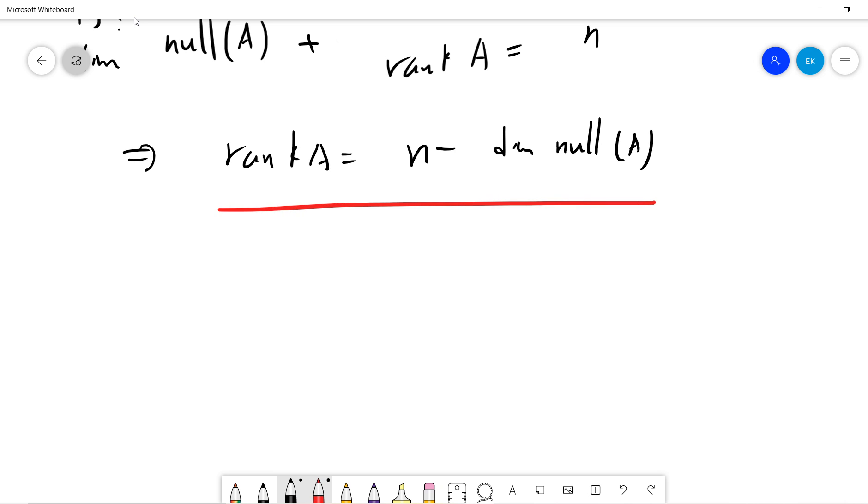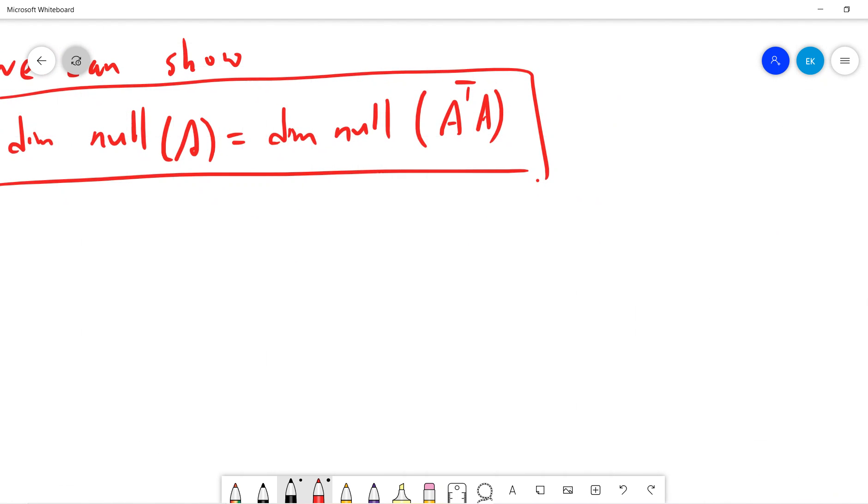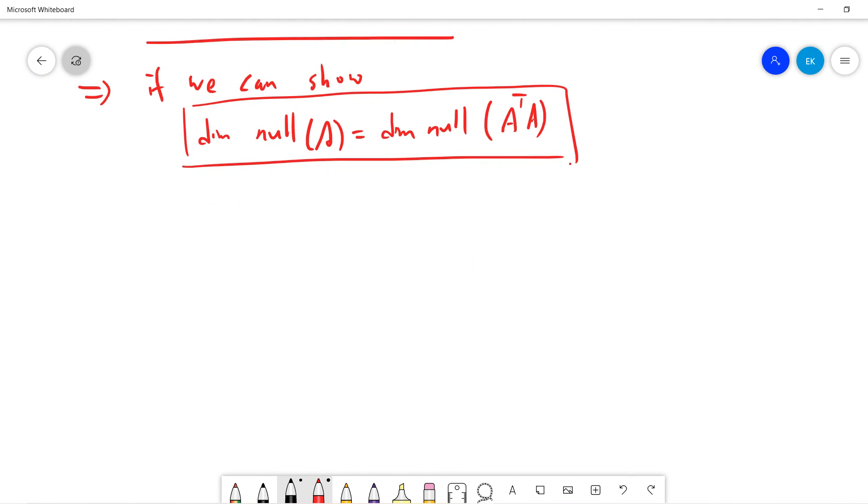This tells us that if we can show the dimension of null A is the same as the dimension of null A^T A, then we have our proof. So we are trying to prove this equality of null spaces.